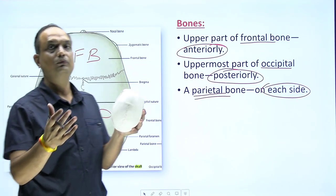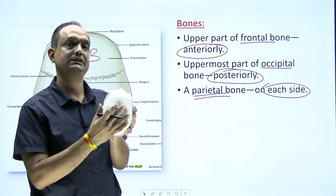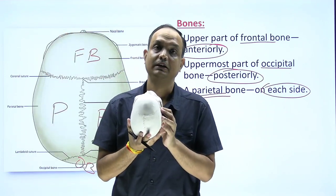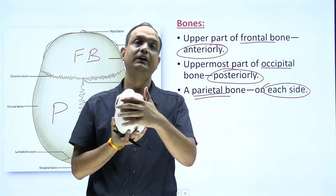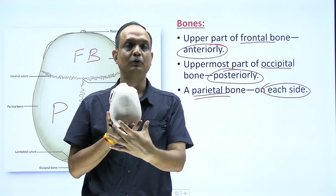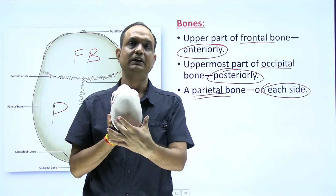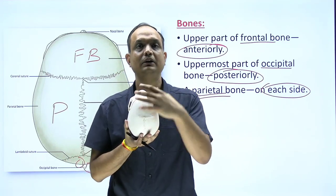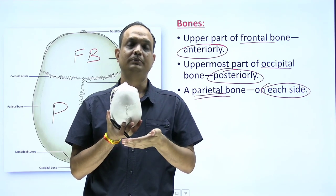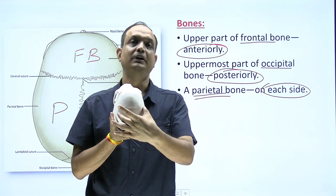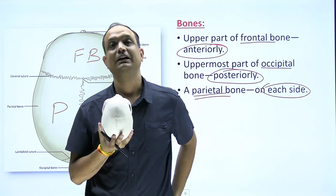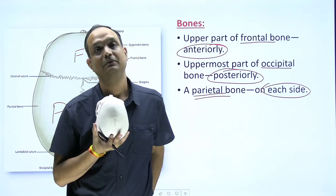When you are looking at the norma verticalis, keep in mind that it is wider posteriorly and narrower anteriorly. It has the frontal bone, occipital bone, and in the middle one pair of right and left parietal bones.